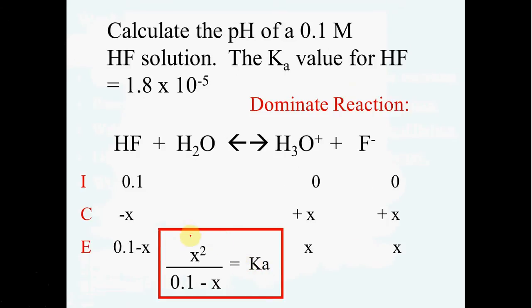Put these in to the equilibrium expression. You're then going to simplify which you can do because of the size of your Ka and throw out that x. And then simply solve for x. When you find x, it will be equal to the hydrogen or hydronium ion. And when you take the negative log of that, you will have found the pH.